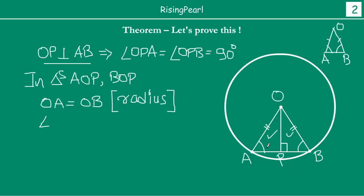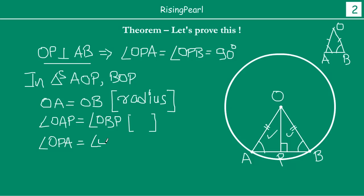So therefore, angle OAP is equal to angle OBP because they are angles opposite to equal sides in triangle OAB. And on top of that, we also know that angle OPA equals angle OPB — both are 90 degrees, because OP is perpendicular to AB.